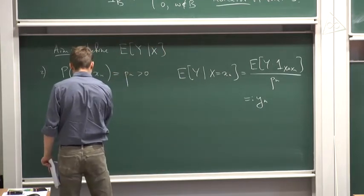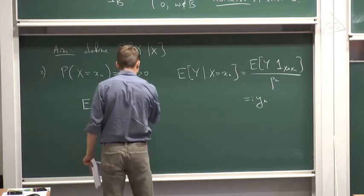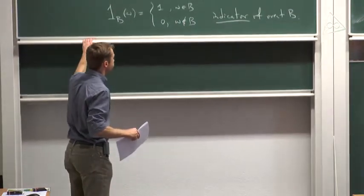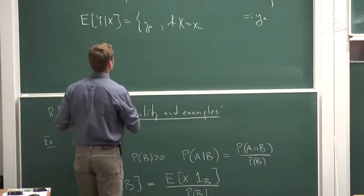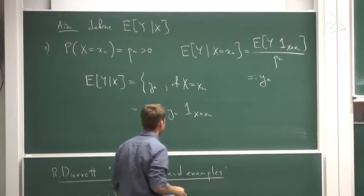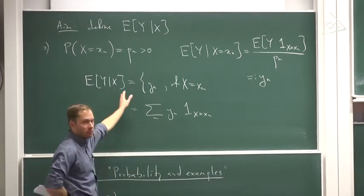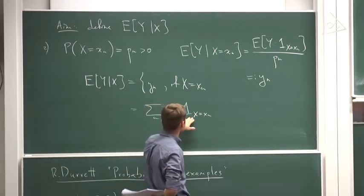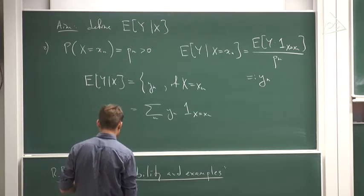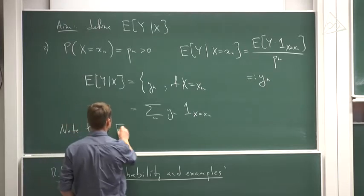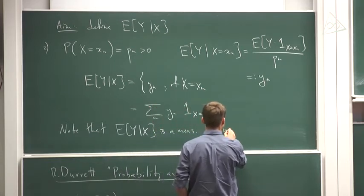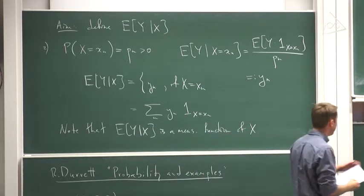We define the conditional expectation of Y given X as Yₙ if X equals xₙ. There is a compact way to write it: the sum over all n of Yₙ times the indicator that X equals xₙ. This is not just a number — it's a function such that if X equals xₙ, this function takes value Yₙ. Note that in this case, the expectation of Y given X is a measurable function only of the random variable X.